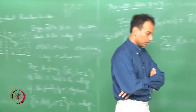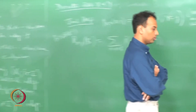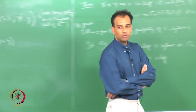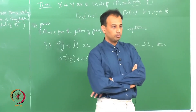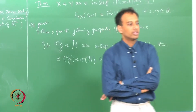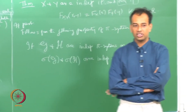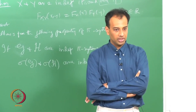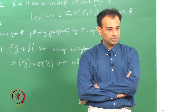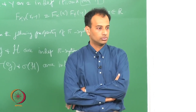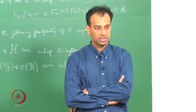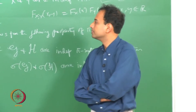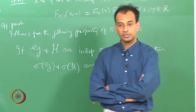The joint PMF is non-zero only on a countable subset of ℝ². So just like in one dimension, if you give me the joint PMF in two dimensions, I can figure out everything there is to figure out about discrete random variables x and y.